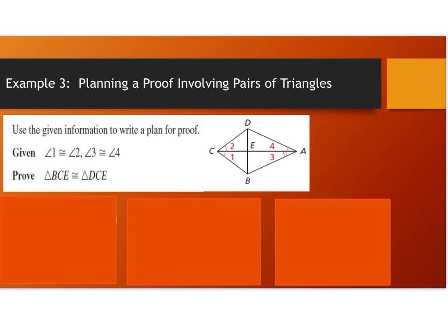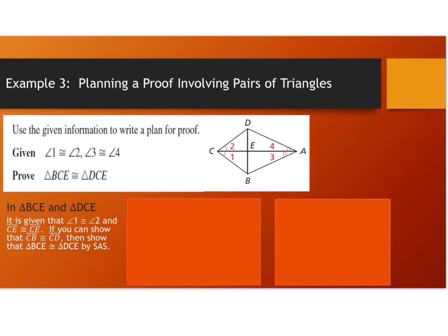In triangle BCE and triangle DCE, you can use the given that angle 1 is congruent to angle 2, and that CE is congruent to itself — remember any time two figures share a side, you can use the reflexive property to show congruence. So we can show that triangle BCE is congruent to triangle DCE by side-angle-side.